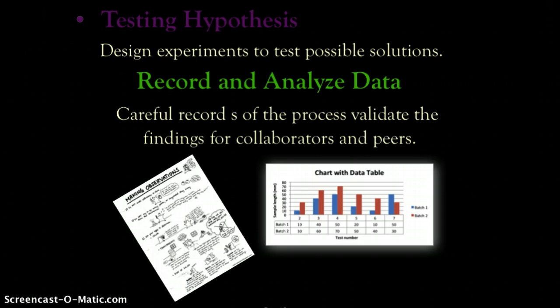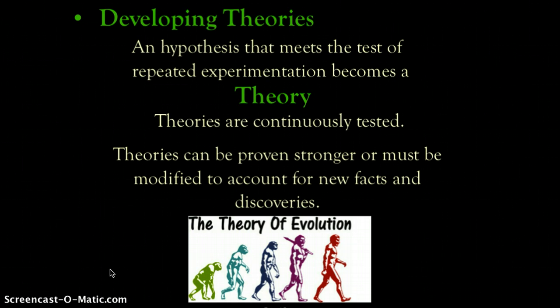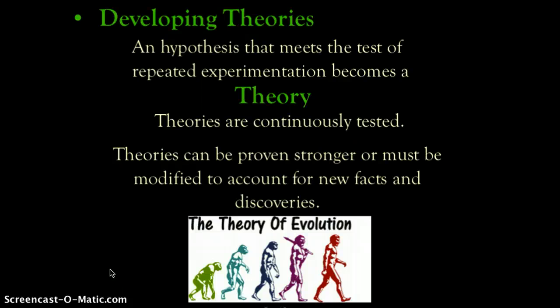If your findings repeat — if you get the same conclusion each and every time — you begin to form a theory. A theory is basically a conclusion that has been repeated enough times to be accepted. Theories must be continuously tested; they can become stronger through further testing, or sometimes they need to be modified along the way.